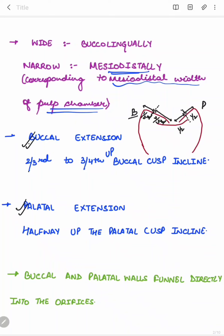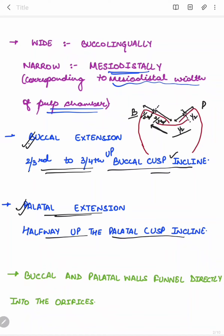The buccal extension is two-thirds to three-fourths up the buccal cusp incline, and the palatal extension is halfway up the palatal cusp incline. If extended properly, the buccal and palatal walls will funnel directly into the orifices — the buccal orifice and the palatal orifice.